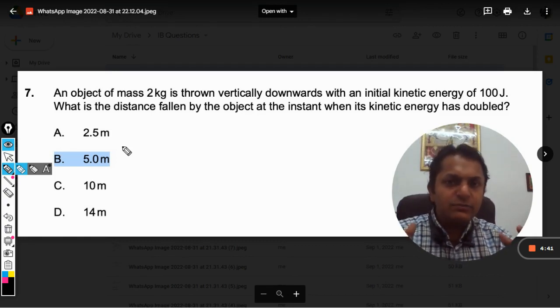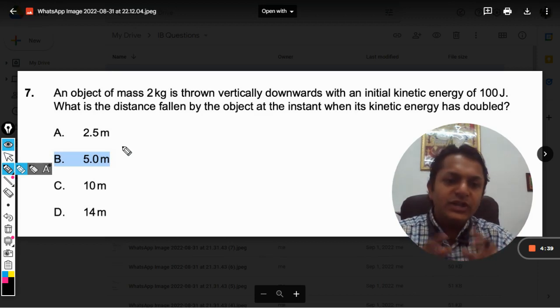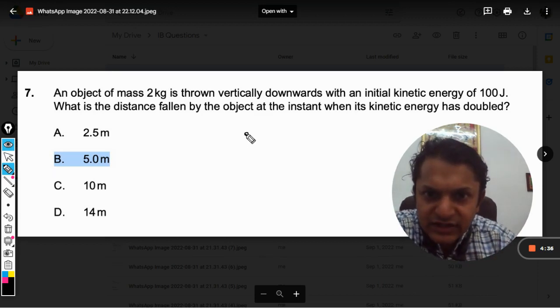So what is the distance by which it has to fall? It is given in the question that there is a body, an object that is basically falling under the effect of gravity.